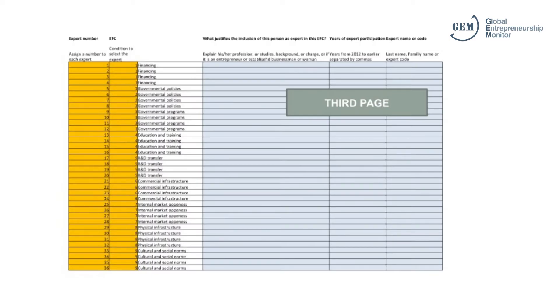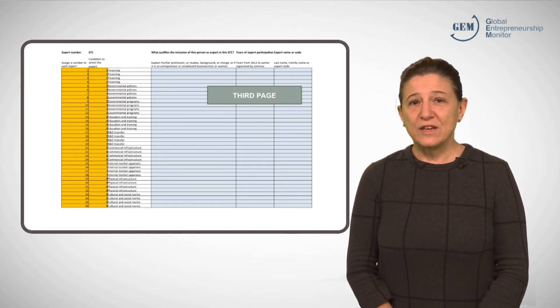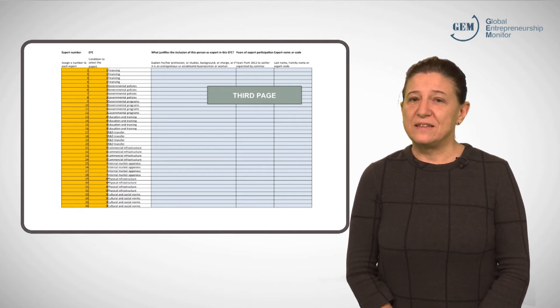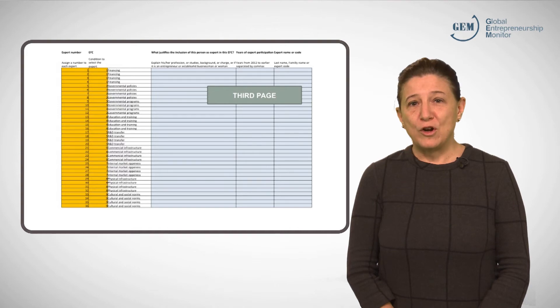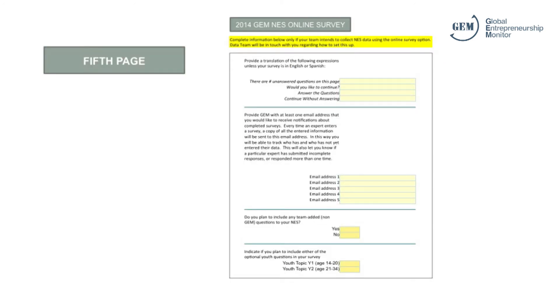The third page is the core of the document. Here you will find several columns in which you must list important information about each expert. The list is organized by the entrepreneurial framework conditions, and experts are numbered from 1 to 36 — the first set relate to financing and the last relate to social and cultural norms. In the first column, you should explain why you have chosen this person as an expert for the EFEC. In the second column, you record when the expert has participated in the NES before, if applicable. The third column allows you to list the name of the expert or an identification code. There are additional columns for contact details, sources of contacts, and response to interview requests. If you are conducting your survey using the online platform, you do not need to complete page 4 and should move onto page 5.